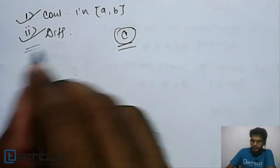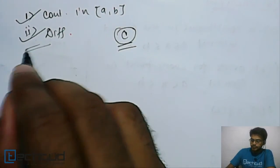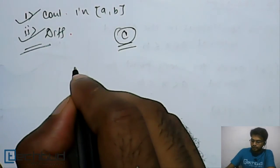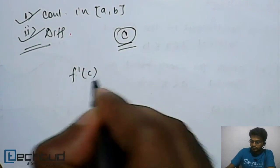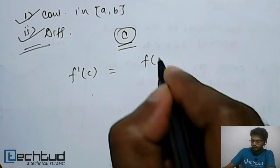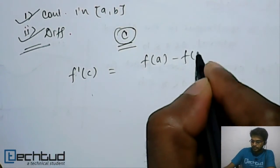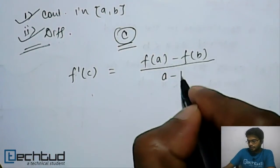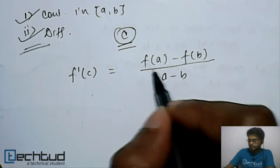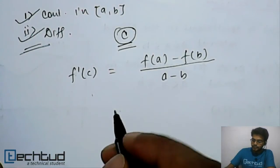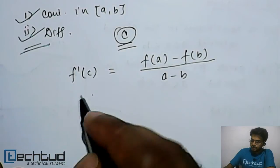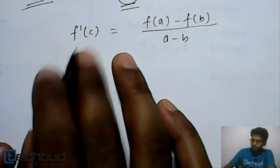As we know that it satisfies Lagrange theorem, mean value theorem, according to this theorem, now we will have f'(c) will be equal to f(b) - f(a) upon (b - a). That's the same. Now, let's differentiate this and put the value of f'(c).